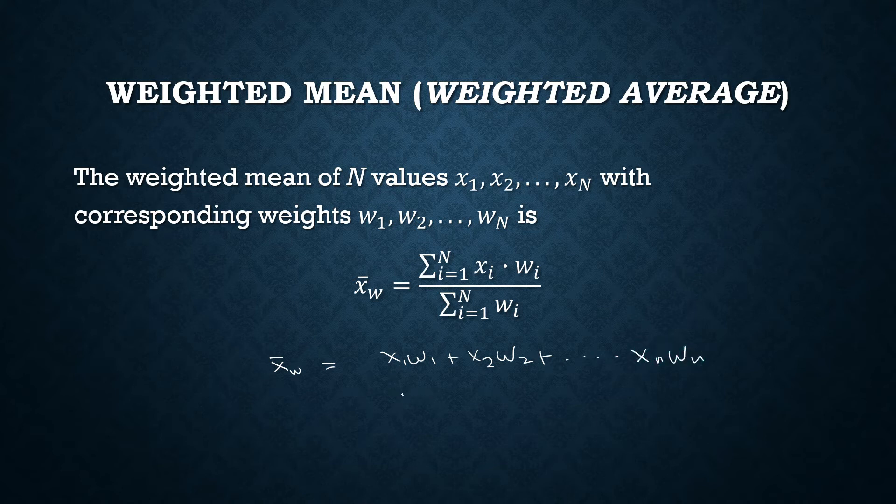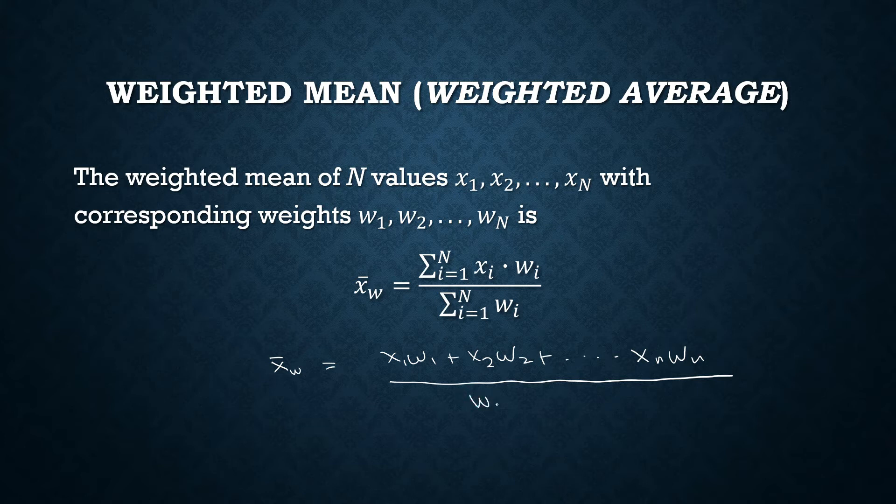We are multiplying the scores or the values x sub i with its corresponding weight. And then we will get their sum. And then after that, we will divide it by the sum of all the weights.